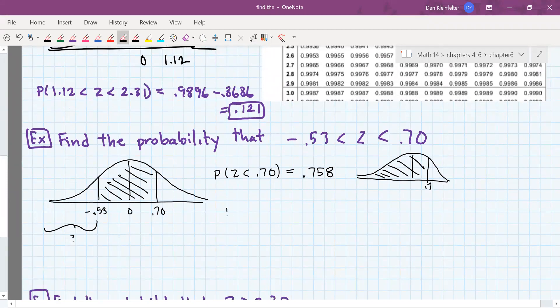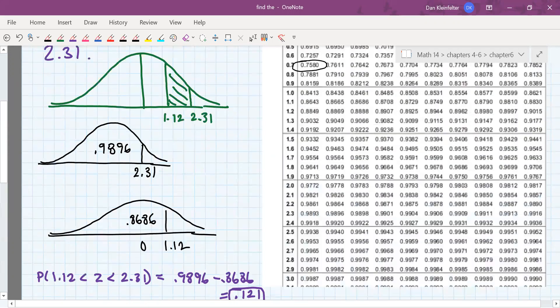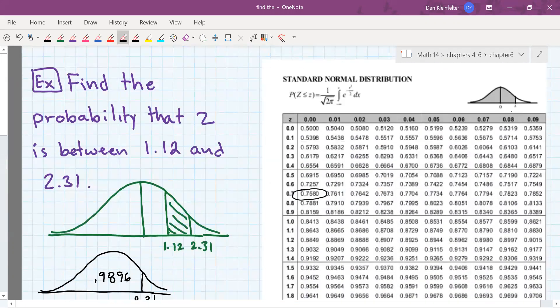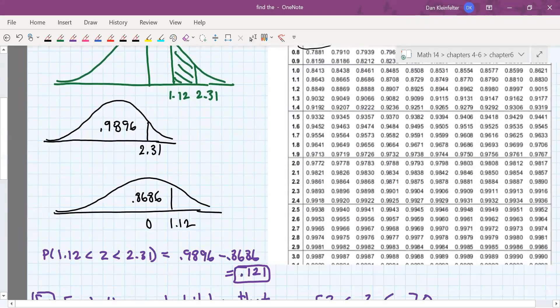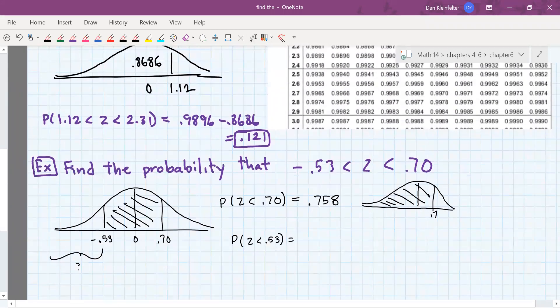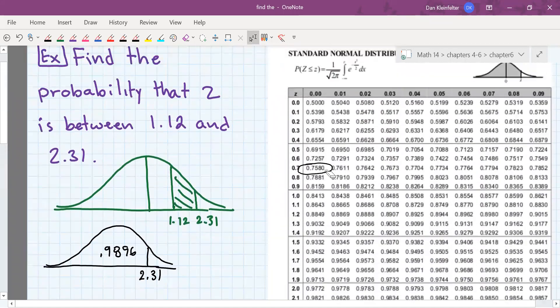So let's find the area up to positive 0.53. Why positive 0.53? Because our table just tells us positive z values. And you'll notice that our whole table, all the z's are positive. So for 0.53, there's 0.5 and then 3, that's 0.7019.